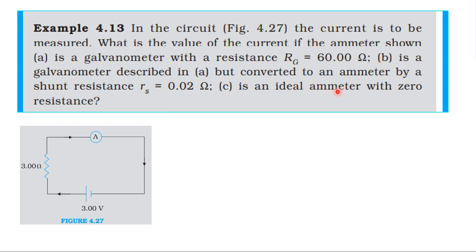(c) An ideal ammeter with zero resistance. For the first case, the current is equal to EMF divided by total resistance. The total resistance is the external resistance plus the galvanometer resistance.